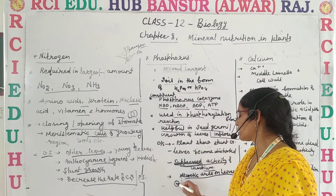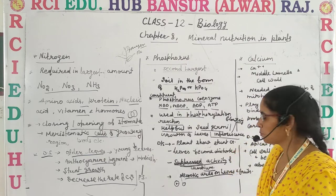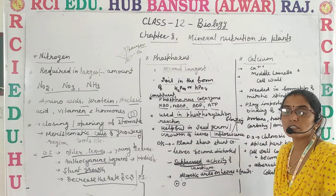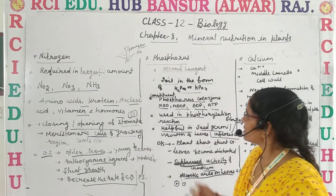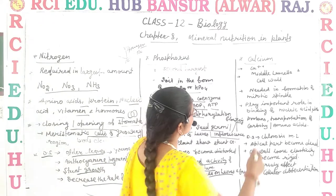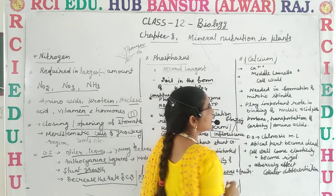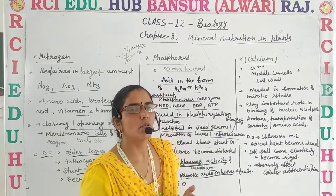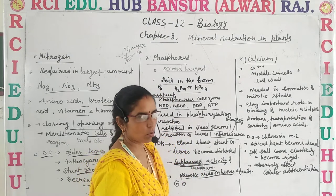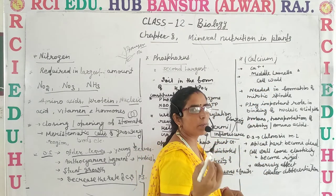Necrotic brown-colored spots appear on leaves and fruits. That concludes phosphorus as the second element. Now let's discuss the next one, which is calcium. Calcium is also very important for the growth of plants.